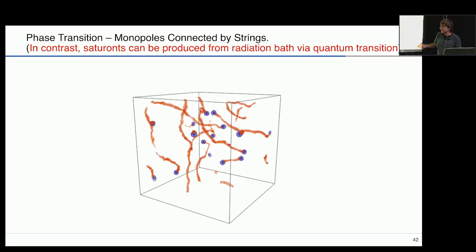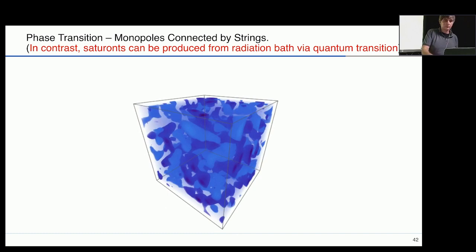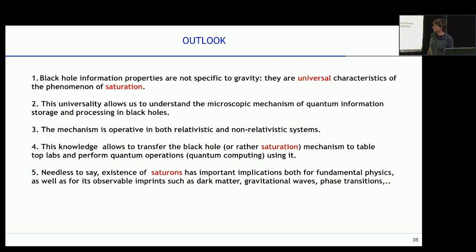But saturated objects can be formed directly by quantum transition from a thermal bath, from radiation — you don't need a phase transition for their formation. That's another important implication.